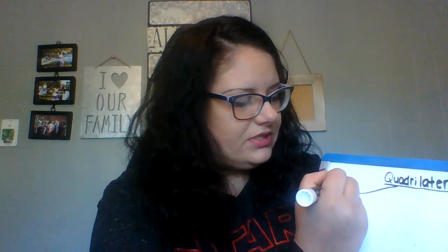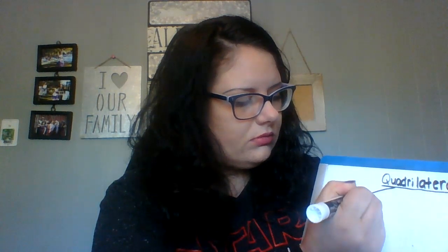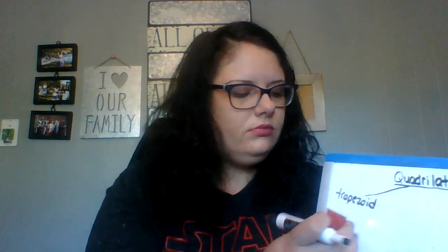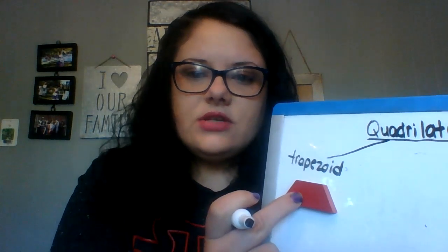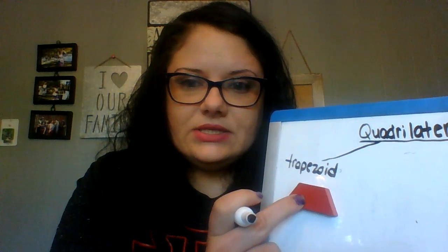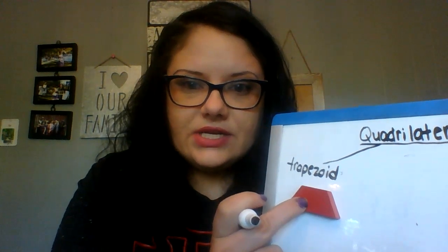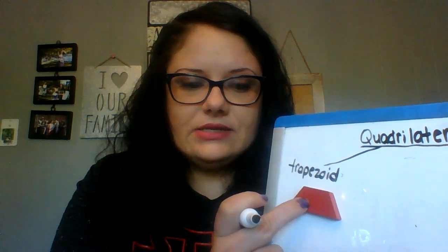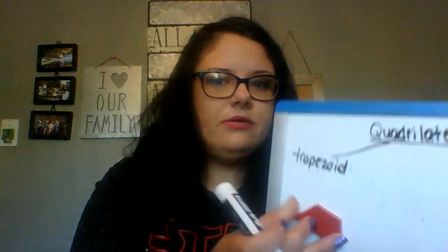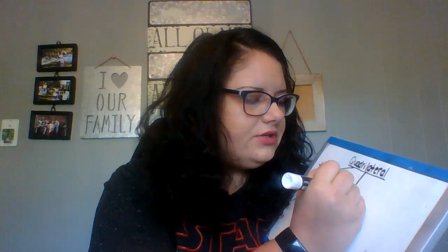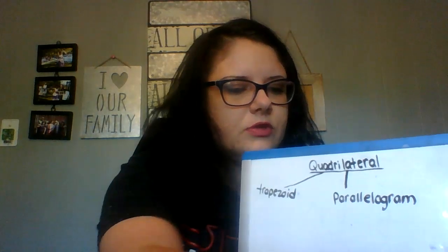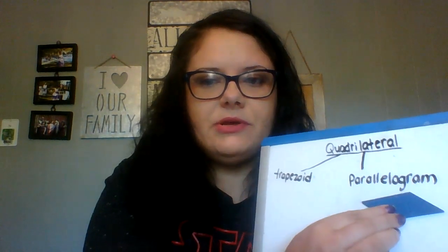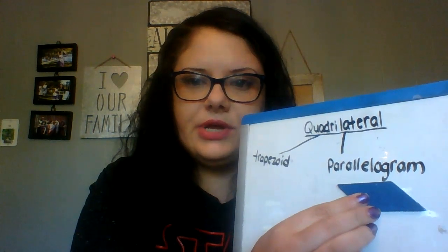One type of quadrilateral we've already talked about is the trapezoid. It's going to be over here by itself because, yes, it's a quadrilateral, but it doesn't share some of the other traits that these other shapes have. And then we have the parallelogram — remember, in order to be a parallelogram you have to have two sets of parallel sides.